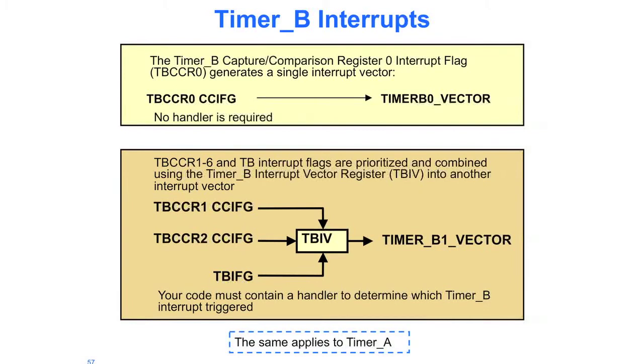The same thing applies to timer A. If you're looking at the other counter-compare registers on timer B, that would be 1 through 6, and the timer B interrupt flags, all those are prioritized and combined using the timer B interrupt vector register into another interrupt vector.